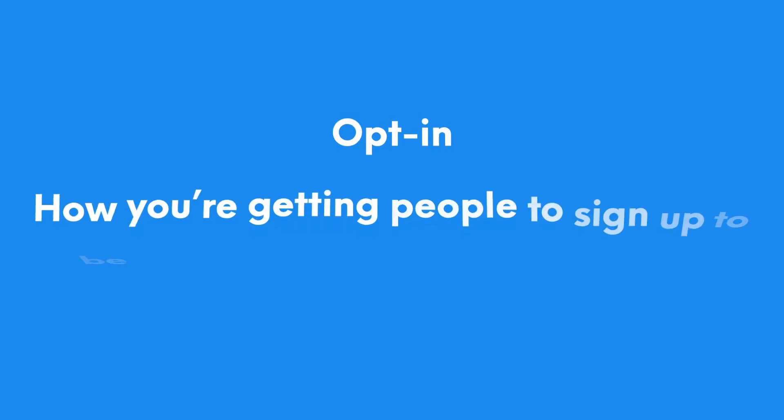As part of your registration process, you do have to show your opt-in flow — in other words, how you're getting people to sign up to be texted. An SMS opt-in is where you're getting someone to type in their information and consent to your business texting them, meaning they're opting in to be texted by you.